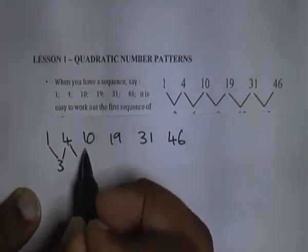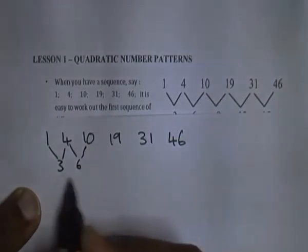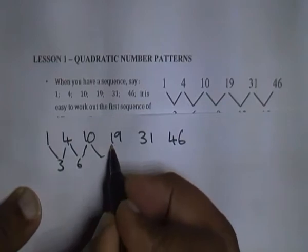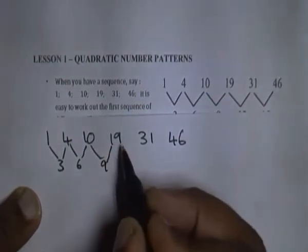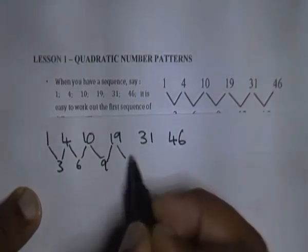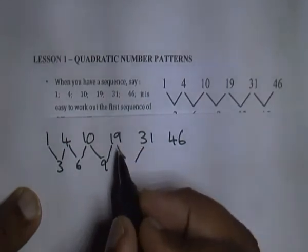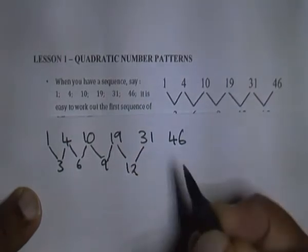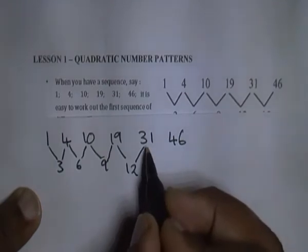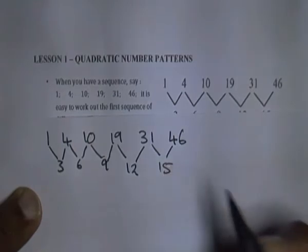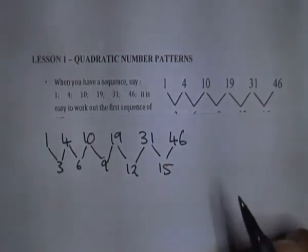From 4 to 10 there's a difference of 6, so that's not our normal number patterns anymore. From 10 to 19 there is a difference of 9. From 19 to 31 there is a difference of 12, and 31 to 46 gives you a difference of 15.